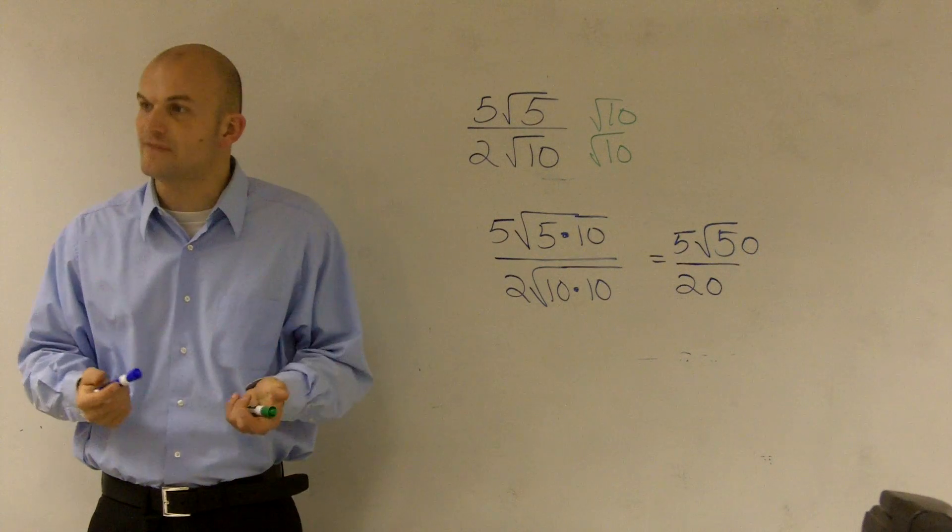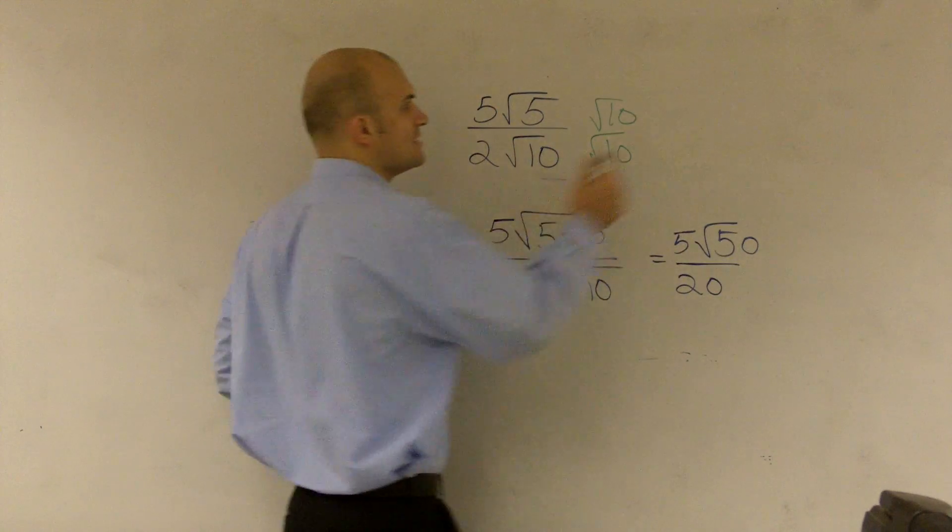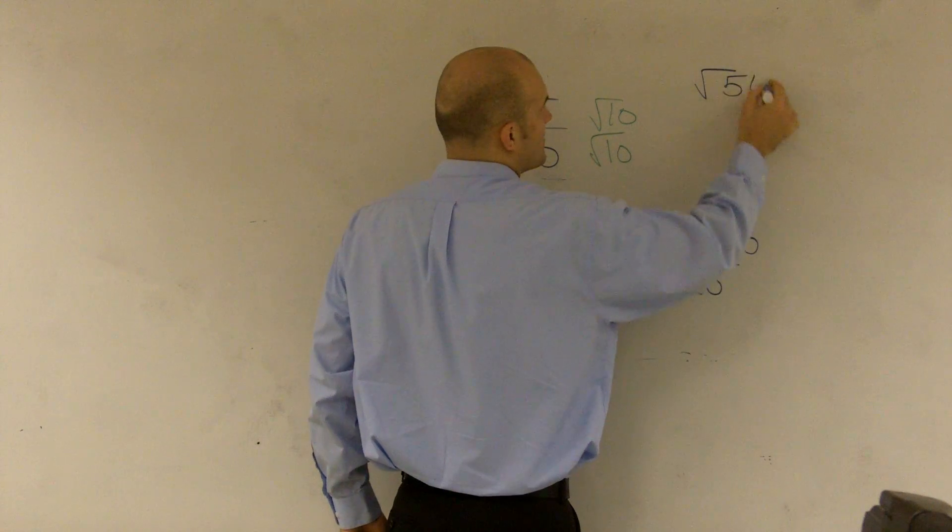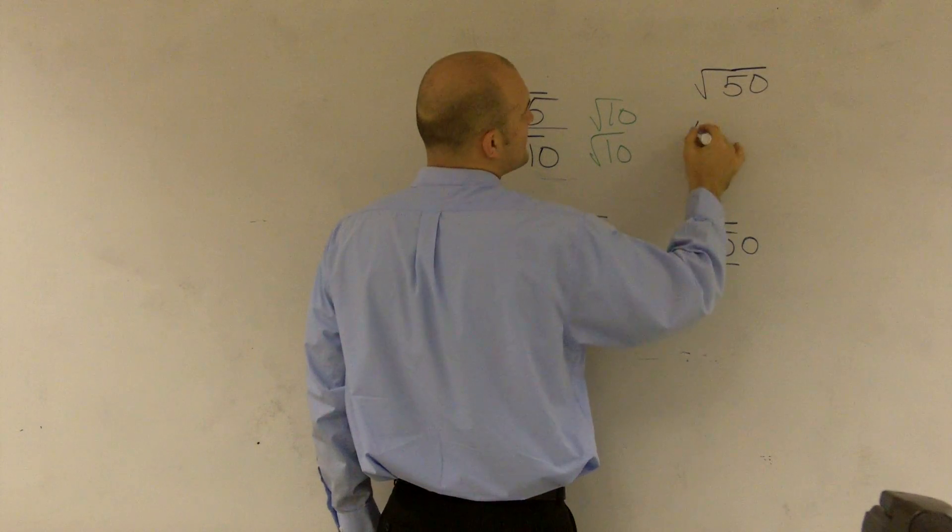Then I need to look at this and say, well, can I reduce the square root of 50? And I'm not going to go through the simplifying, but yes, you can rewrite the square root of 50 as, what is it, 5 square root of 2?